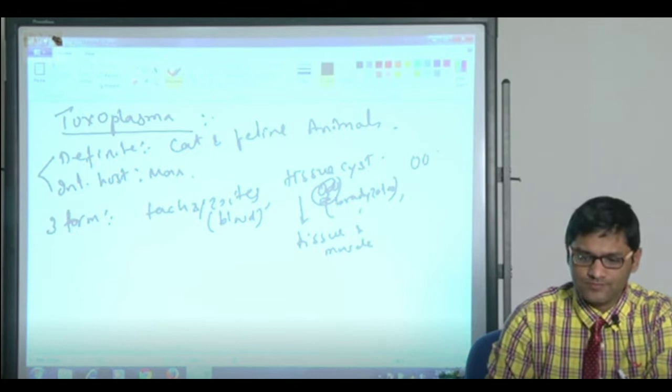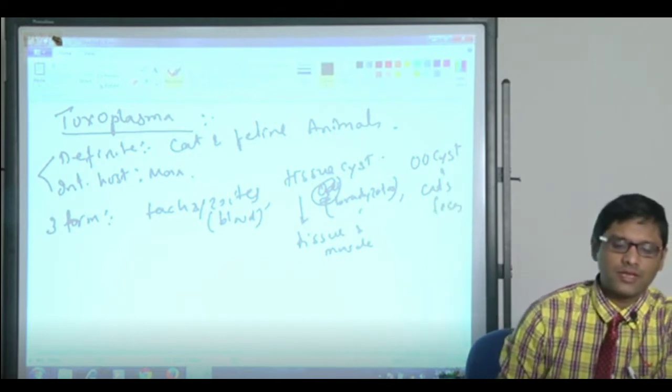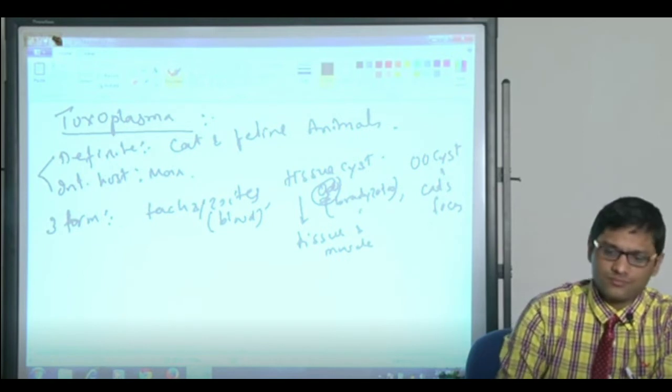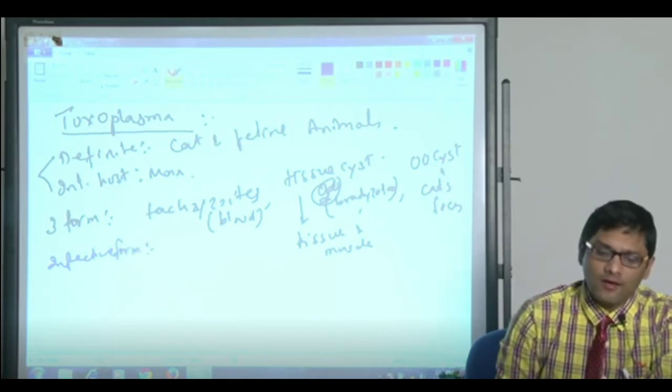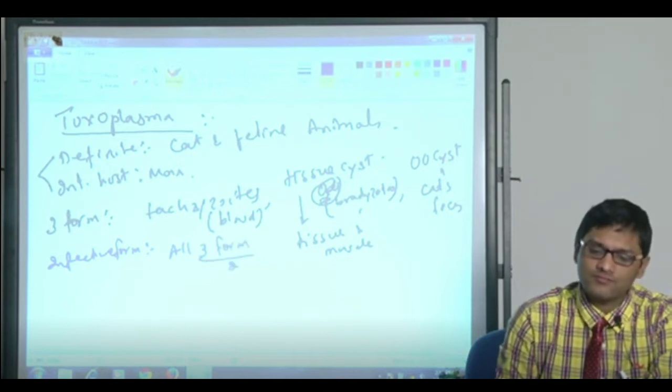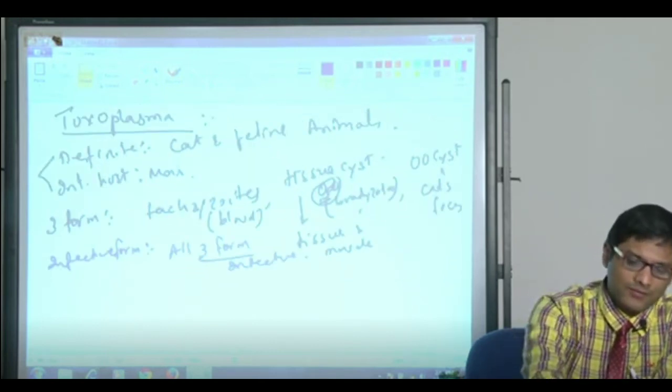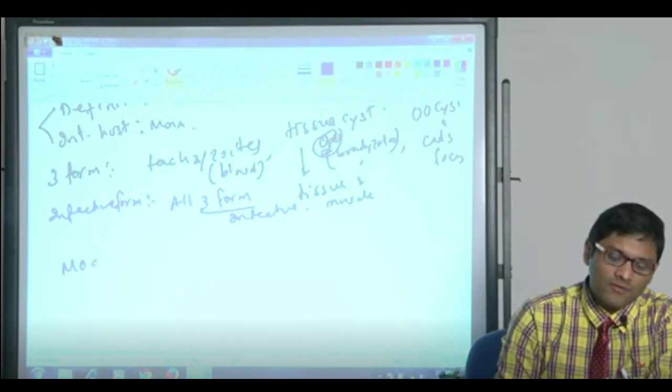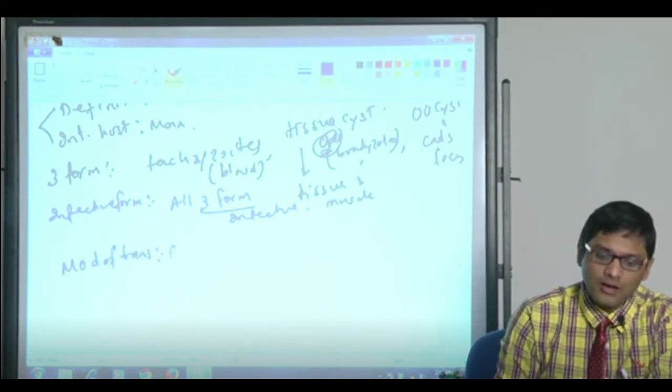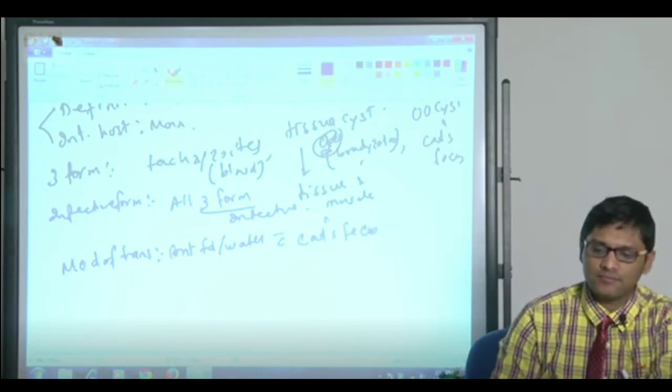Third is oocyst. Oocyst is seen in cat feces. So three morphological forms are there, and if they ask you which is the infective form, the answer is it is the only parasite where all the morphological forms are infective. But if they ask which is the most common infective form, then the most common infective form is related to the most common mode of transmission. The most common mode of transmission is contaminated food and water with cat's feces, that means oocyst.